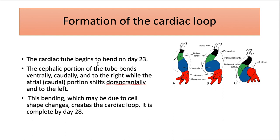The cardiac tube begins to bend at day 23 of embryonic development. This will start with the cephalic portion of the tube, which bends ventrally, caudally, and to the right, while the caudal or arterial portion shifts dorsocranially and to the left. This bending, which may be due to cell shape changes, creates the cardiac loop, and it is completed by day 28 of embryonic development.